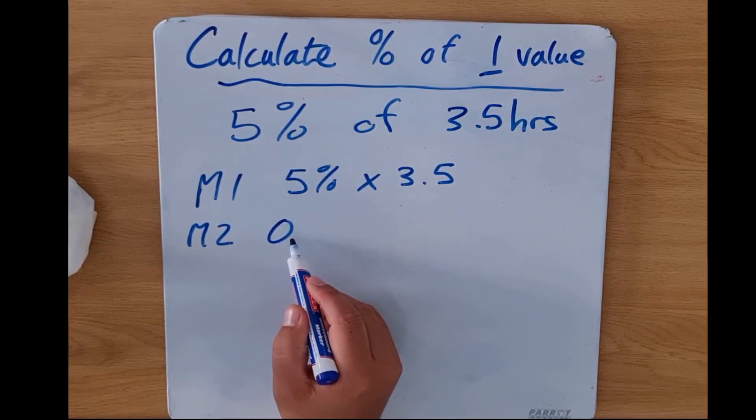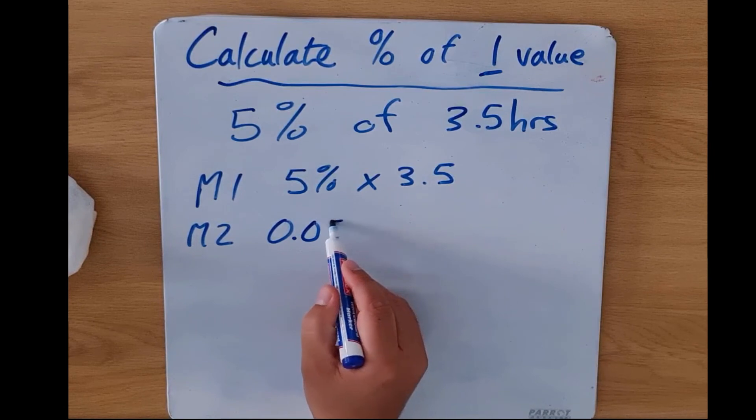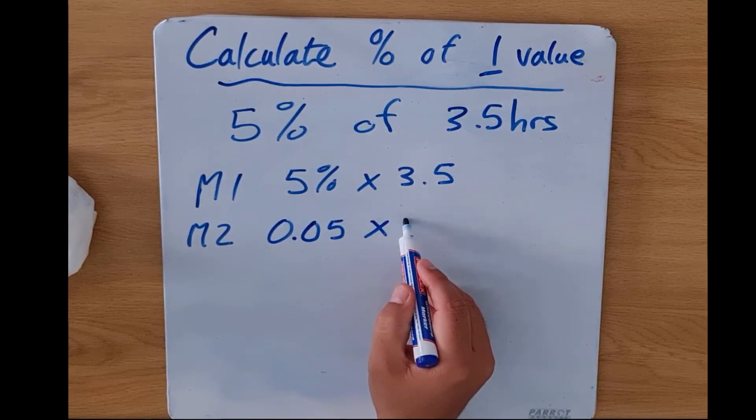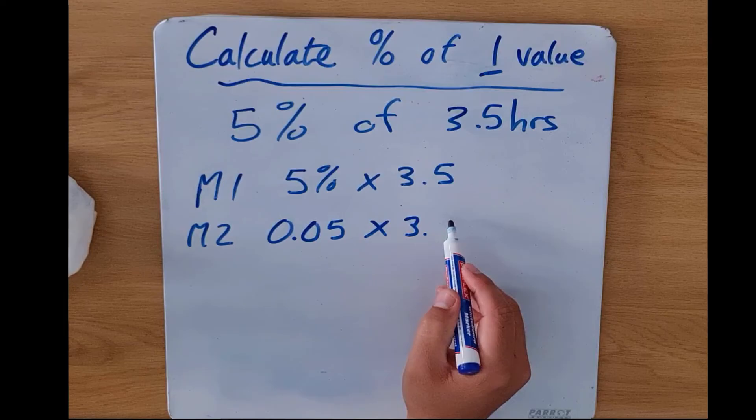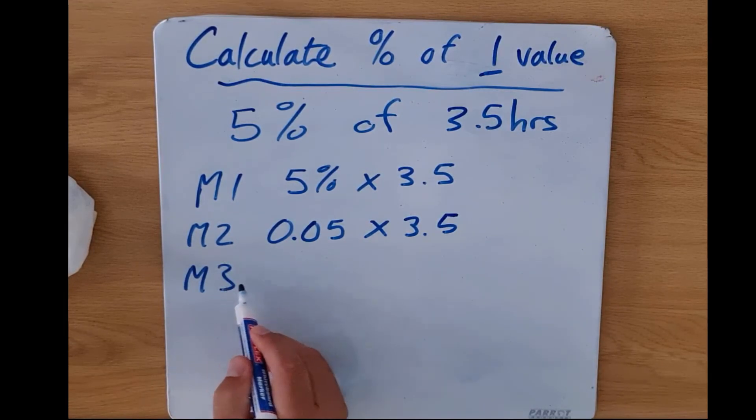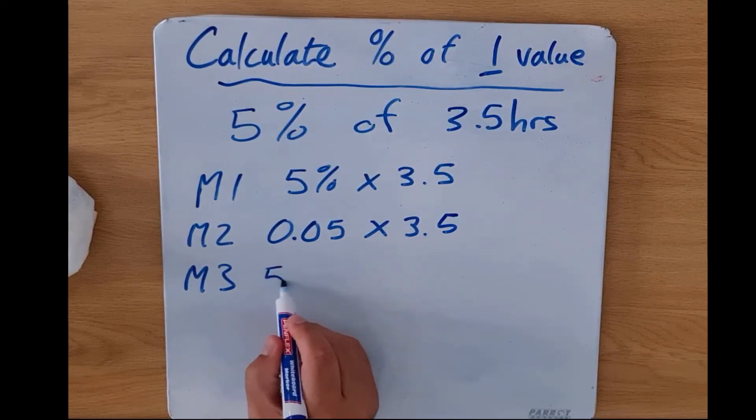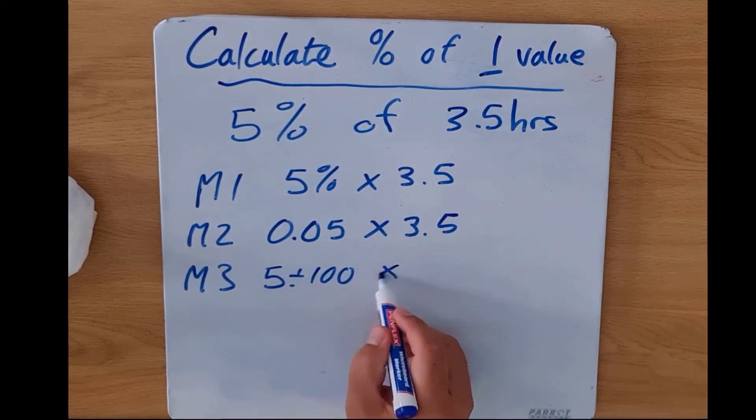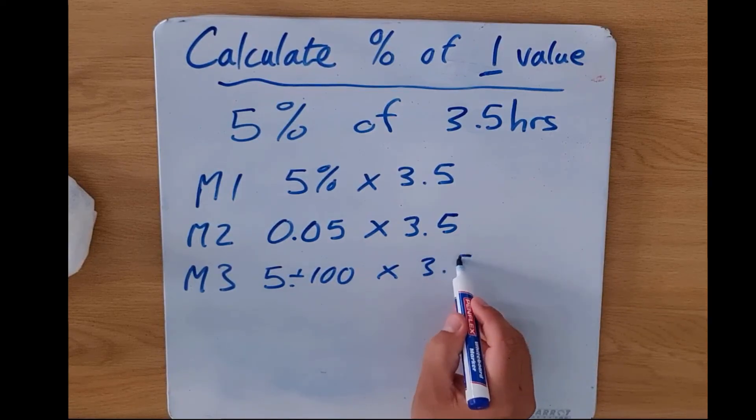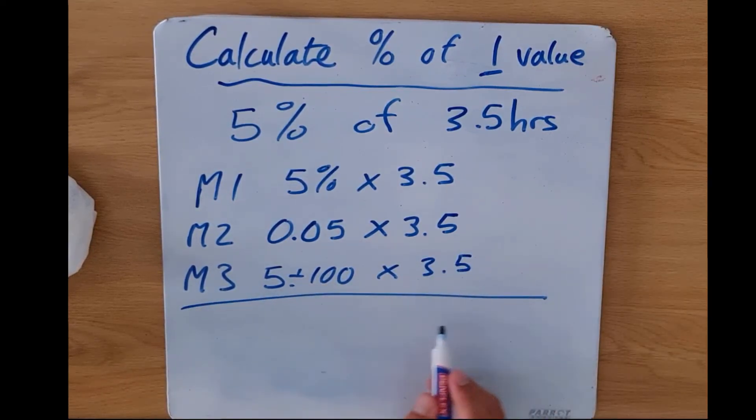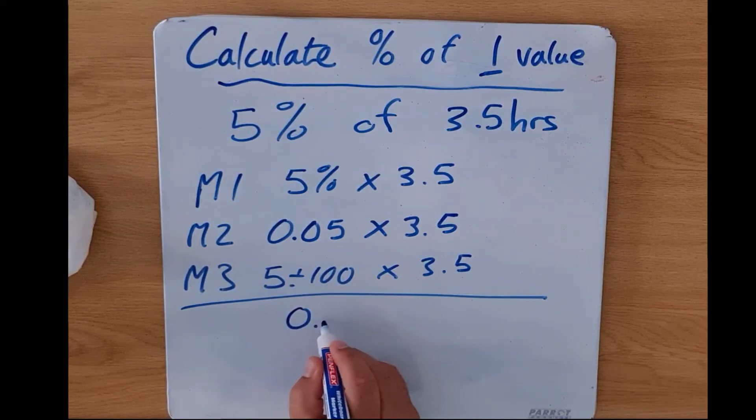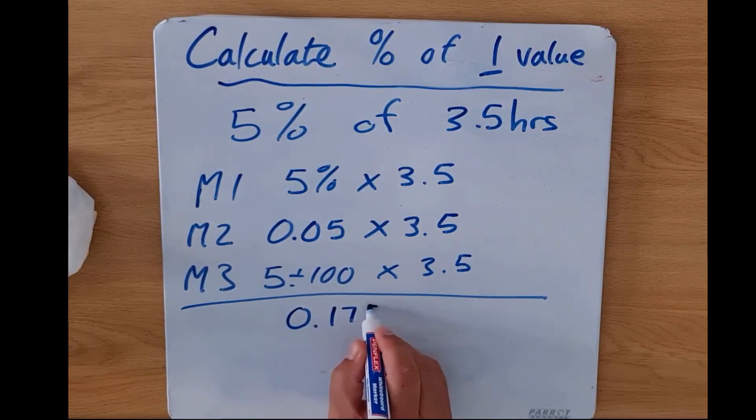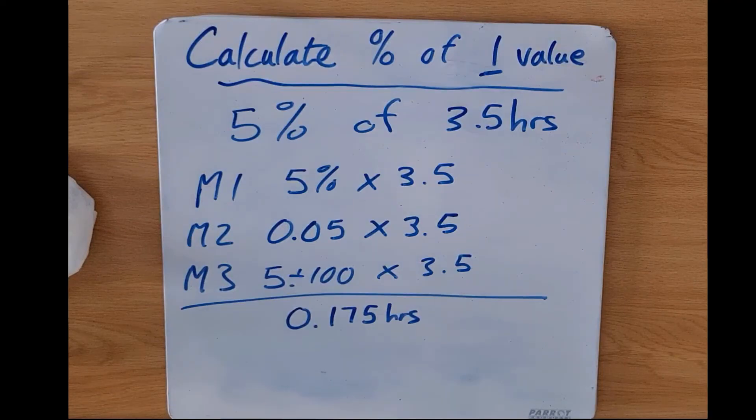And then method three, what is that going to be? We're going to say the 5 divided by 100 multiplied by 3.5. And ultimately what are you going to have? You're going to end up with 0.175 hours which is going to end up being 10 minutes and 30 seconds.